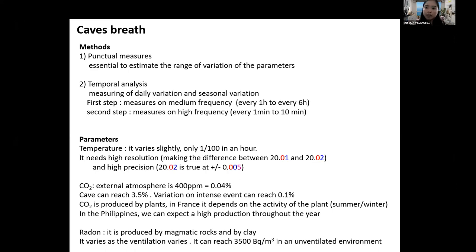For the parameters I have said—temperature, CO2, and radon—temperature normally varies slightly, around one over 100 in an hour. We may be needing high resolution depending on our interest. For example, if we would like this to connect on the proliferation of fungal proliferation and eventually having an effect on the speleothems, we can use high precision. For CO2, the external atmosphere we all know is 0.04 percent, but in caves it can reach 3.5 percent. The variation on intense events can reach 0.1 percent. In France, CO2 is mostly produced by the plants, and depending on activity we can monitor the variation in terms of CO2—is it summer or winter? In the Philippines, we are suspecting that we can have high production of CO2 throughout the years, so this is exciting for us. In terms of radon, this is produced by magmatic rocks and by clay. It varies depending on the ventilation. It can reach 3,500 becquerel per cubic meter in an unventilated environment, so we really have to check this thing.